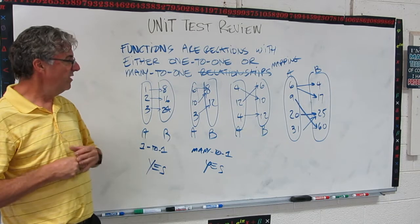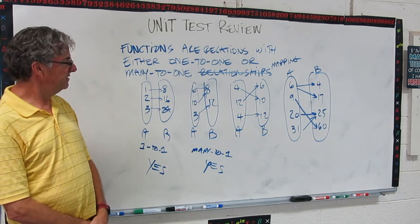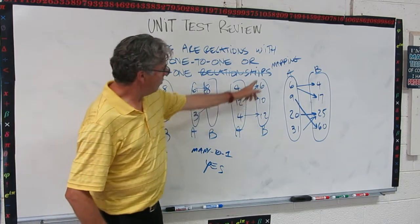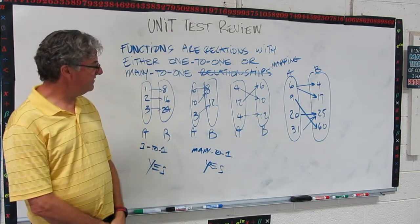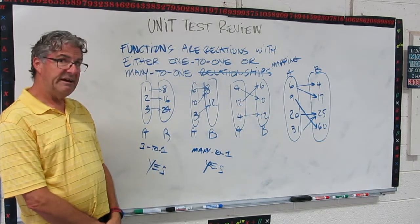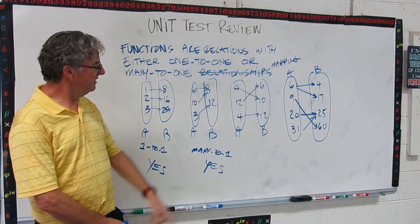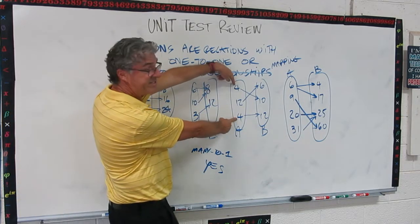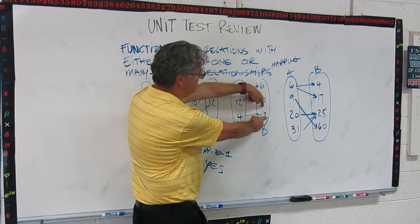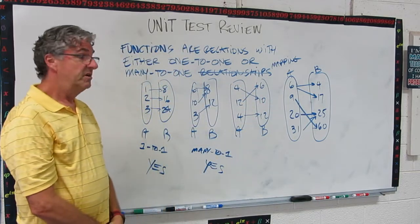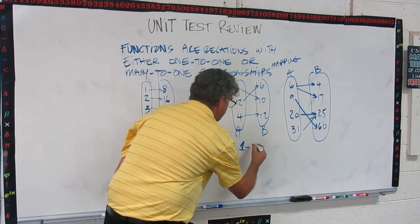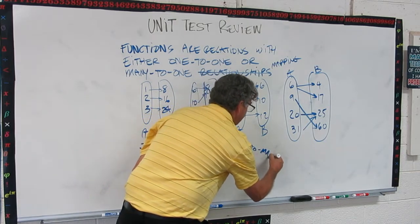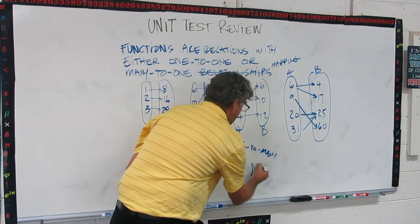Okay, this next one. What do you think? What do we got there? We got one-to-one, one-to-one, one-to-one. Does that make sense? Well, actually this is a little tricky because the four shows up twice here and it's mapping to different numbers. So that's a one-to-many, one-to-many, and that's not a function.